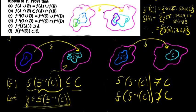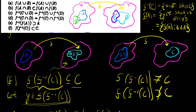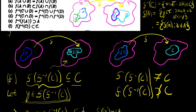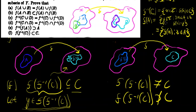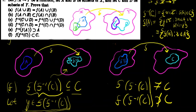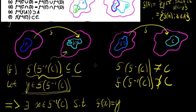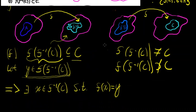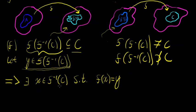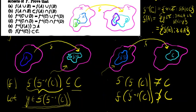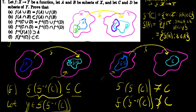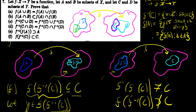This hinges on the definition of what it means to be in the image of a set. If I'm in the image of a set A, then I'm a y in the codomain such that there exists some x in A with f(x) = y. So if I'm in the image of the inverse image of C, that means there exists some x in the inverse image of C such that f(x) = y — directly based on this definition. In other words, the image of f(A) contains the images of all elements of A mapped to the codomain.